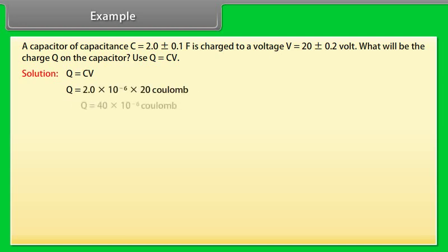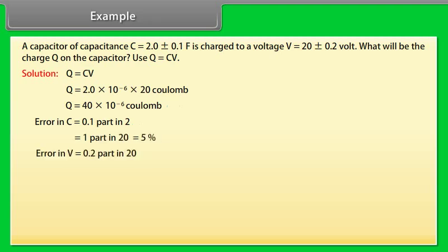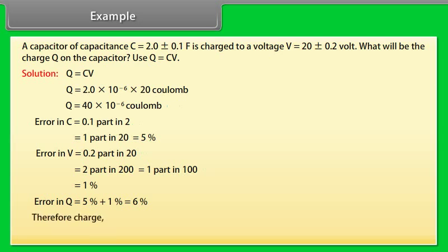Error in C = 0.1/2 = 5%. Error in V = 0.2/20 = 1%. Error in Q = 5% + 1% = 6%. Therefore, charge Q = 40 ± 2.4 × 10^-6 coulomb.